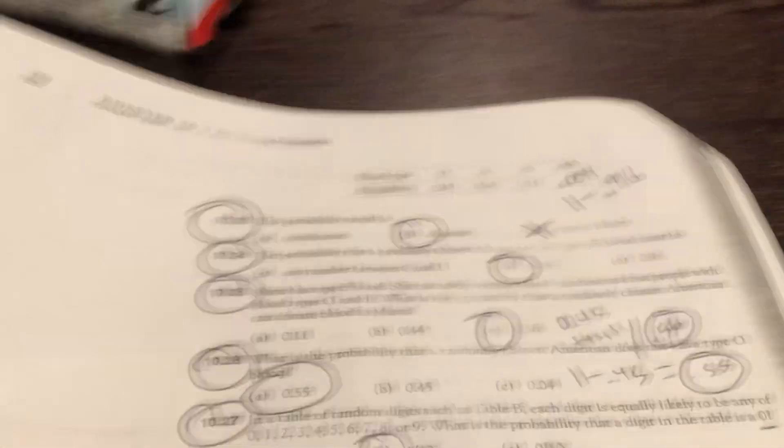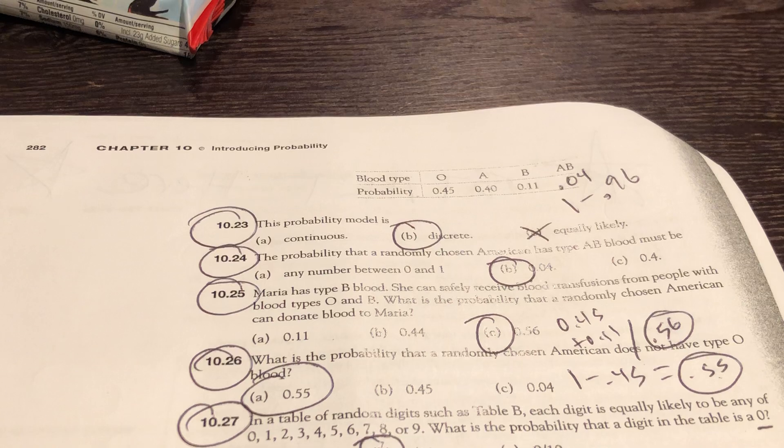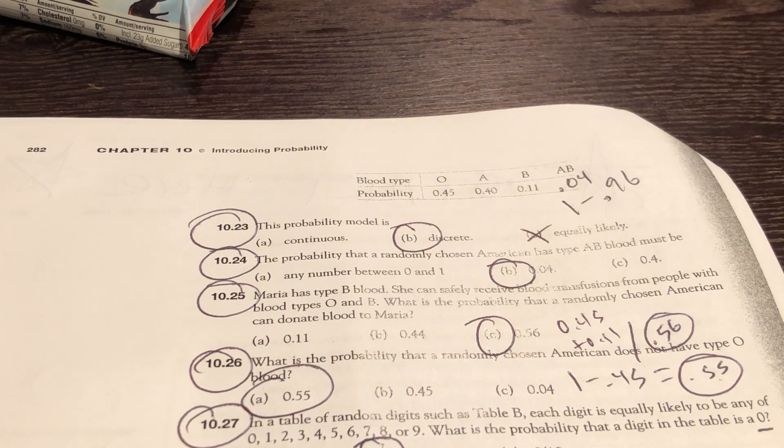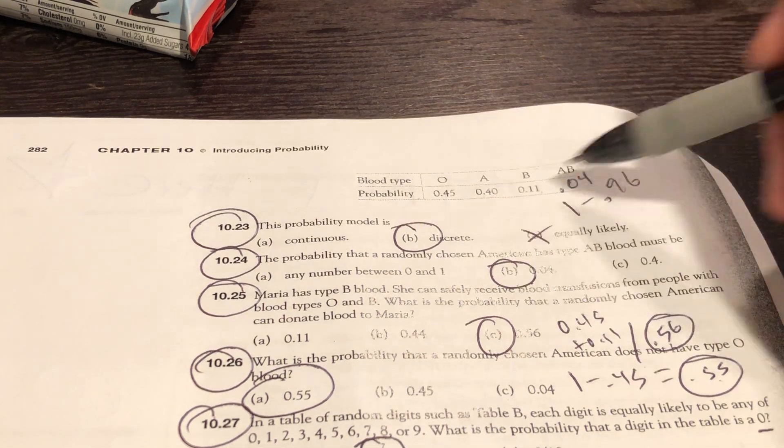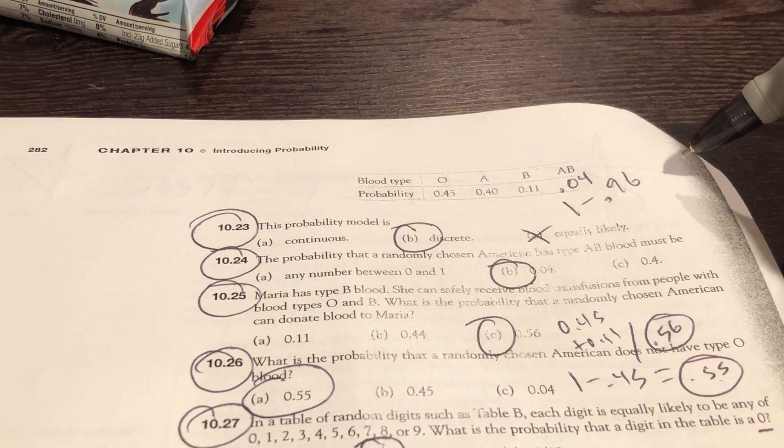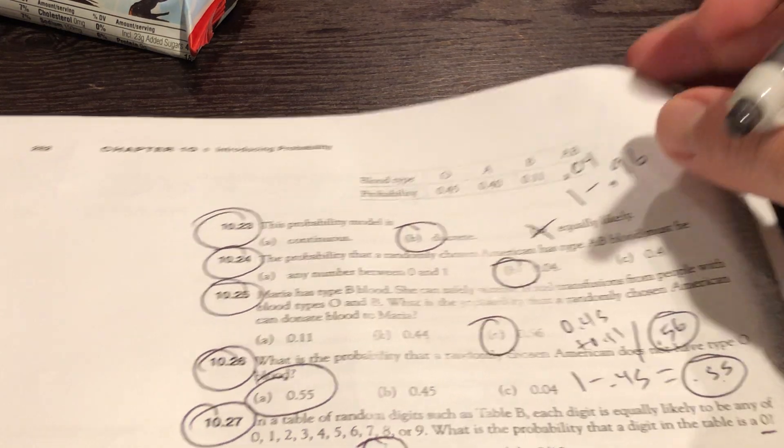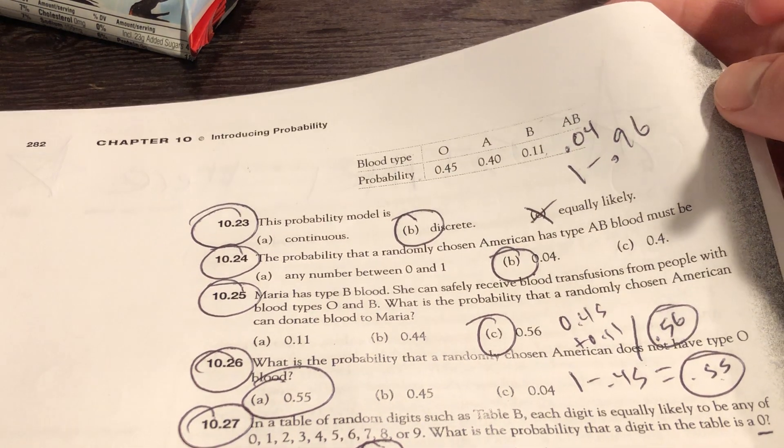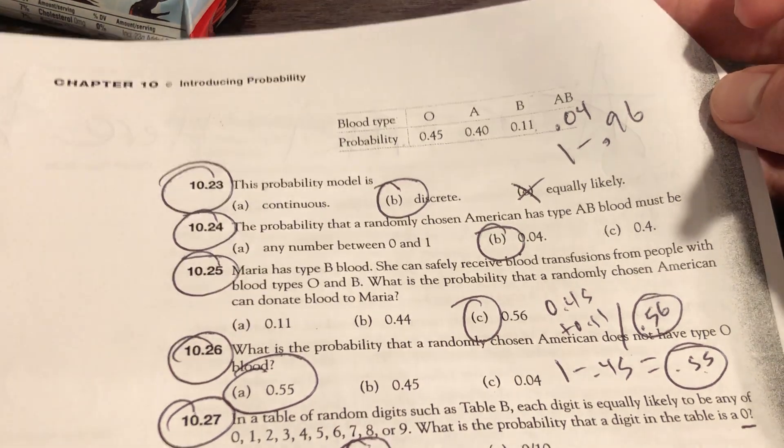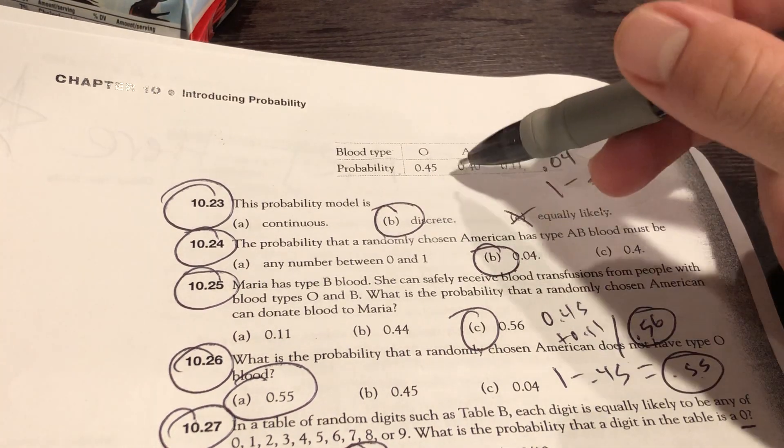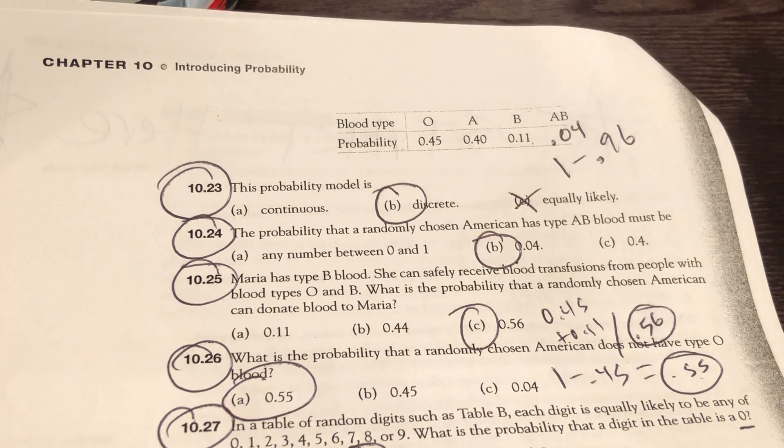Talking about blood type on the next ones. Probability model is discrete. You have four different choices of blood type. Probability that randomly chosen American has type AB blood. Sorry about the lighting there. AB is just one minus 0.96. Add these up. It's 96. One minus that is 0.04.